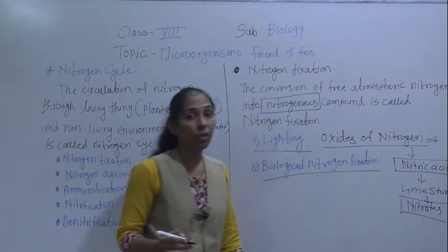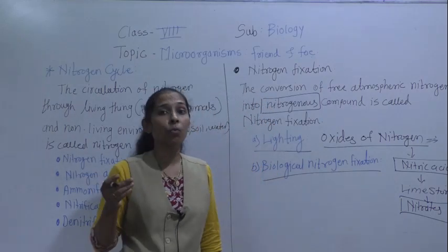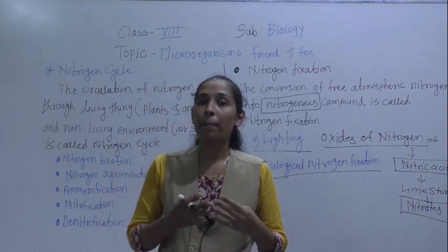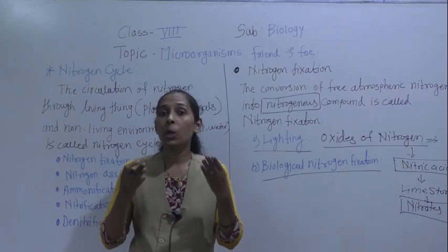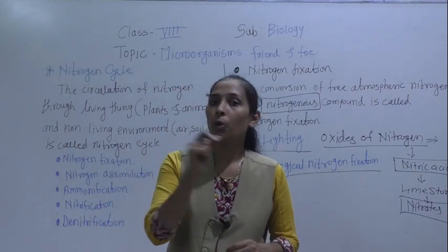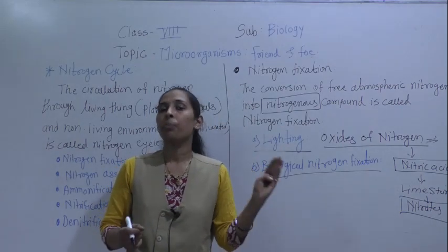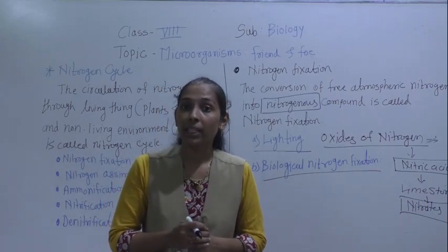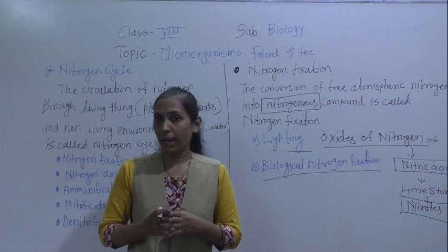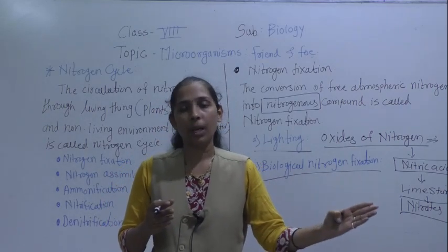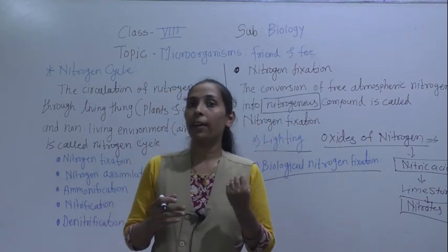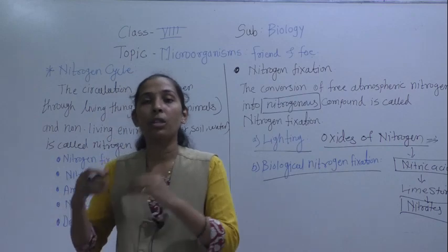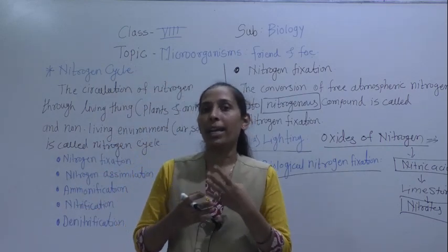Now we will discuss biological nitrogen fixation, which we have seen in our previous lesson. Certain plants like beans and peas — in short, leguminous plants — contain nodules on their roots, called root nodules. One type of bacteria lives in those root nodules: rhizobium bacteria. Rhizobium bacteria helps to convert atmospheric nitrogen into simple nitrogenous compounds that are absorbed and utilized by the plants.